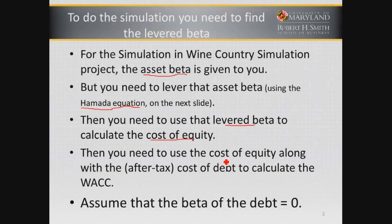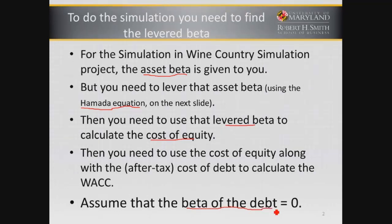Then you'll use that cost of equity along with the after-tax cost of debt to calculate the WACC. We will use a cost of equity that has a positive beta, but we will assume that the beta of debt is zero, so we will not have to worry about beta of debt when you find the required return on debt.